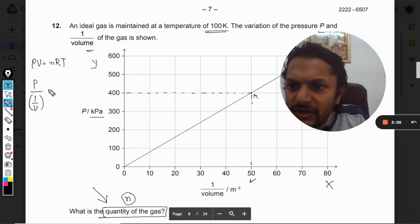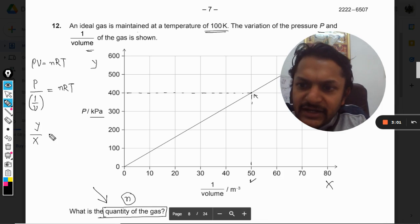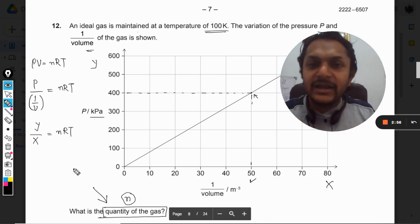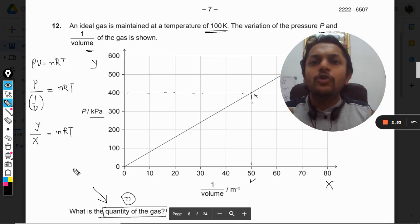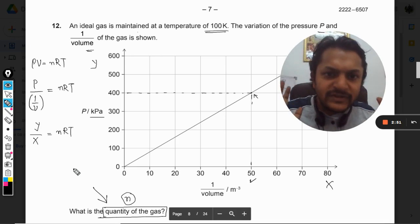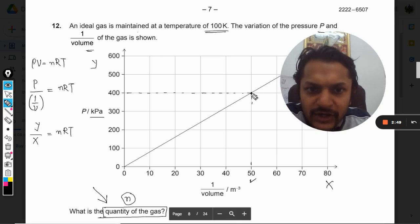Now this P can be substituted as y, this 1/V can be taken as x, and this will be nRT. I am substituting it as y and x just to bring more clarity about what is happening here.